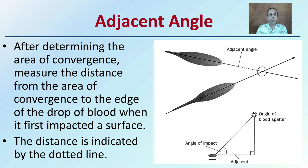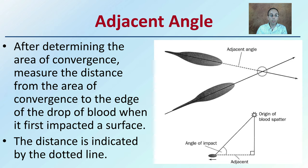After determining the area of convergence, measure the distance from the area of convergence to the edge of the drop of blood where it first impacted the surface. Here we have the adjacent side filling in this area, and the distance is indicated by the dotted line as shown here.